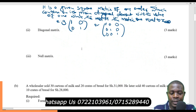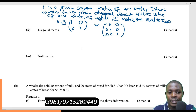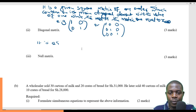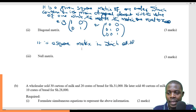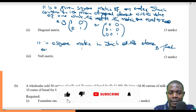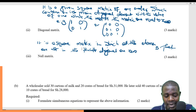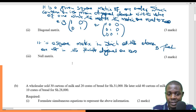Now from part one to part two, we are told to define the term diagonal matrix. A diagonal matrix is a square matrix in which all the elements that are not in the principal diagonal are zero.